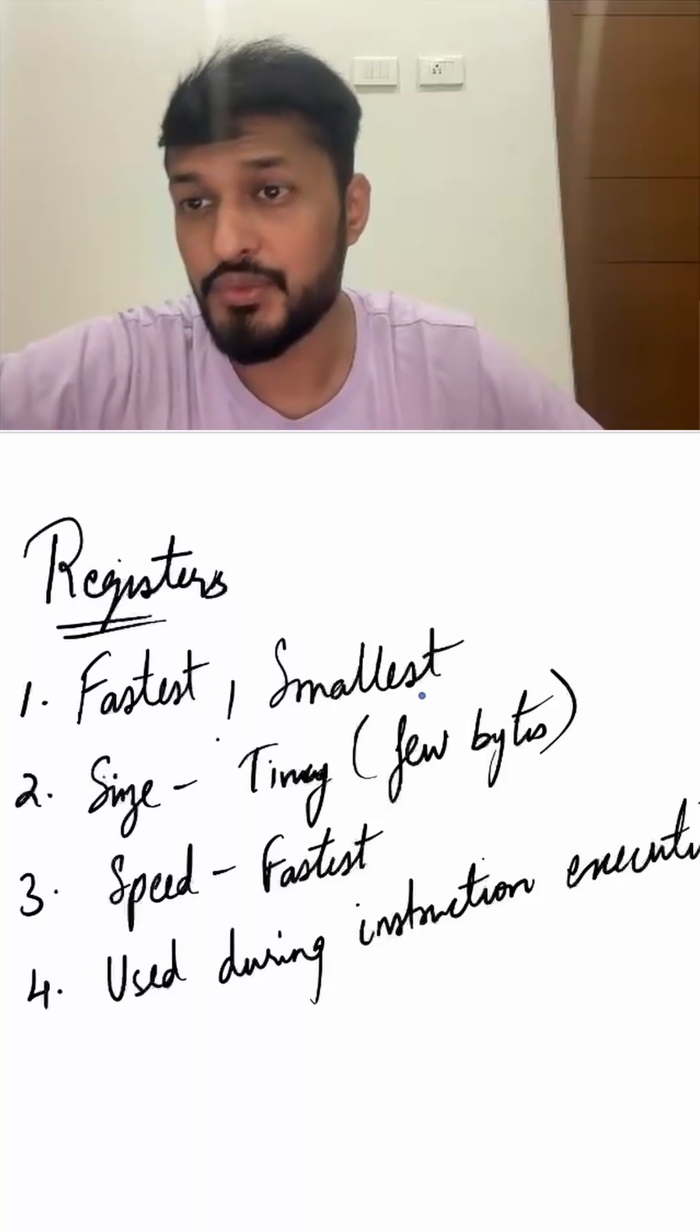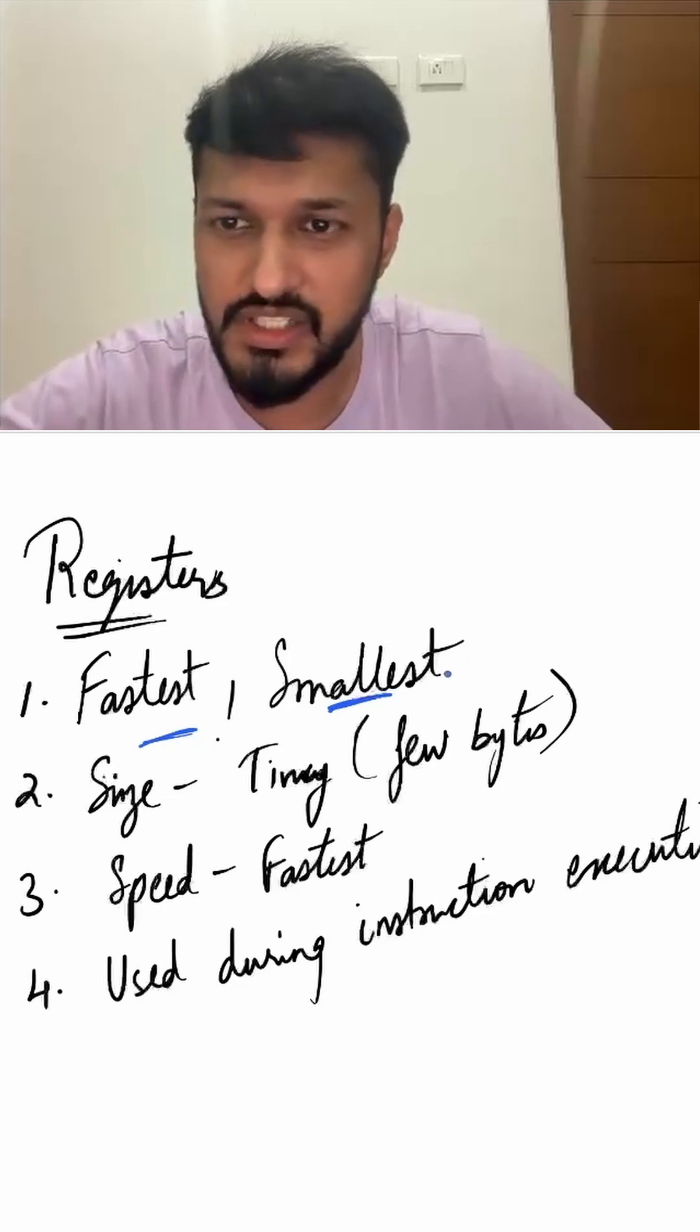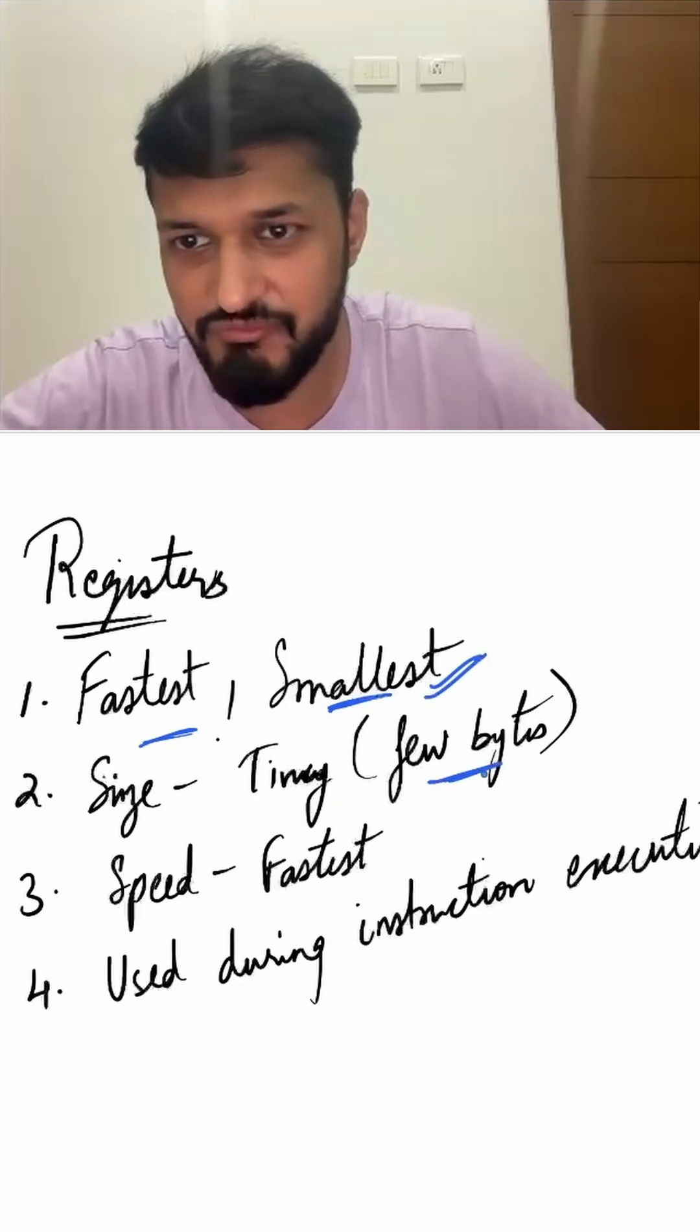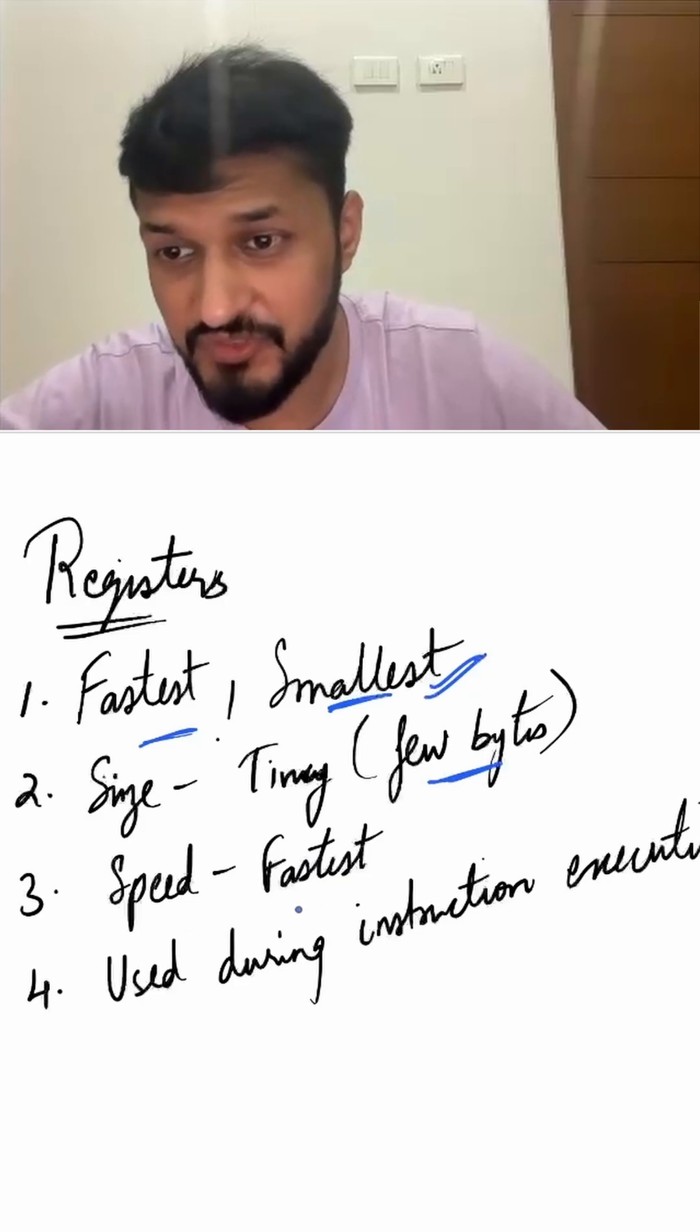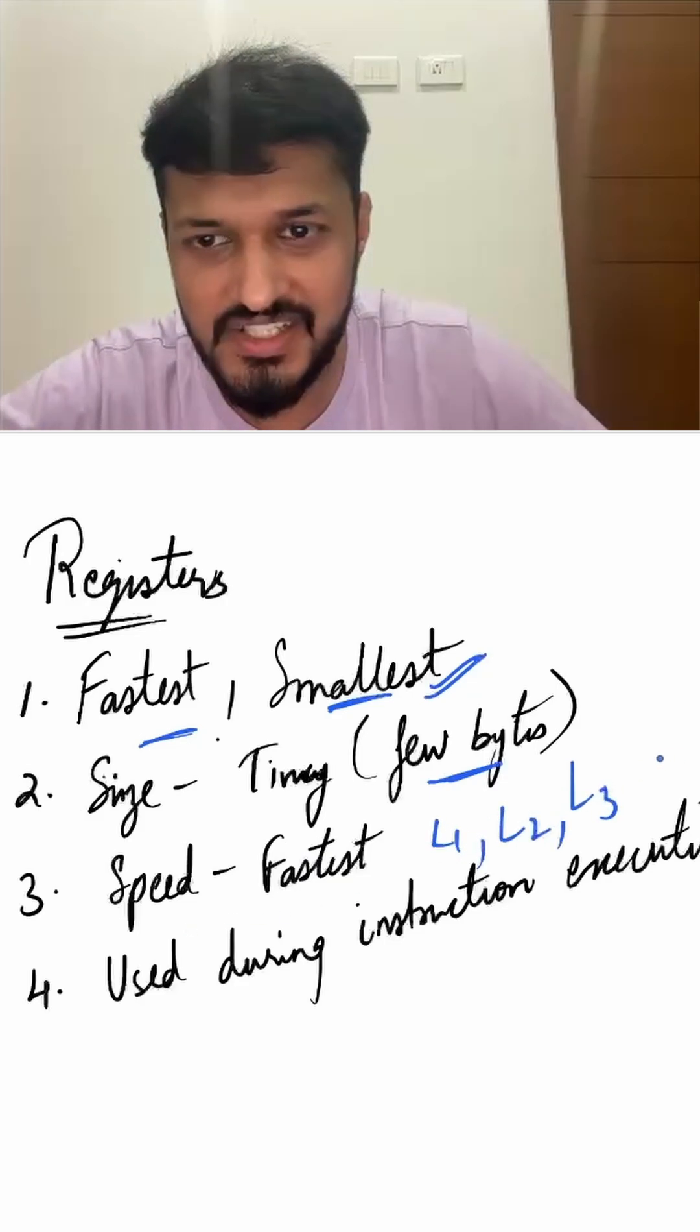Let's look into registers. Registers are the fastest and smallest memory units inside the CPU. They are very tiny in size, just a few bytes, and they are the fastest when compared to L1, L2, L3 cache.